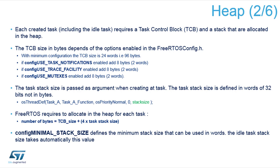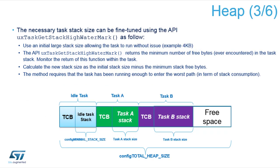The control block size depends on the options you enable in the configuration file. When creating a task you need to pass the stack size dedicated for that task as an argument in the thread definition function. For each task, memory allocated equals the control block size plus four times the task stack size, since the number is given in words. You also need to define the minimal stack size, which is taken by the idle task.